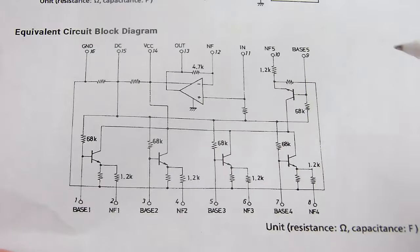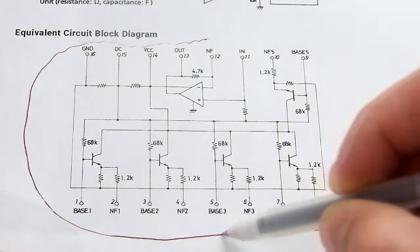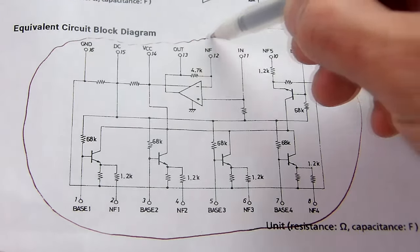If we look at the block diagram of the LA3600, we can see the basics of its operation. It's made up of relatively few components.